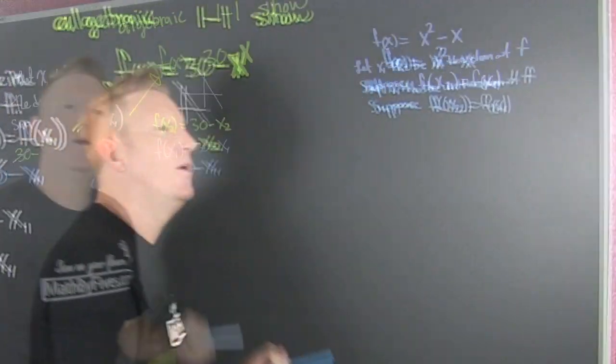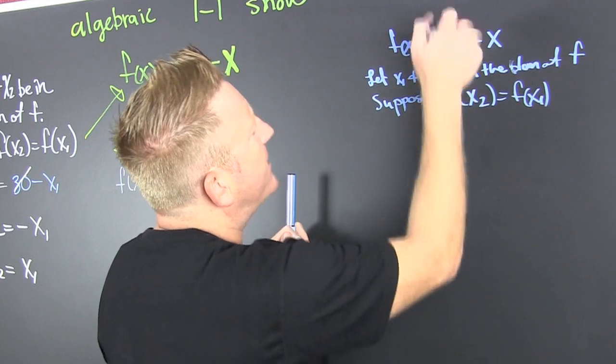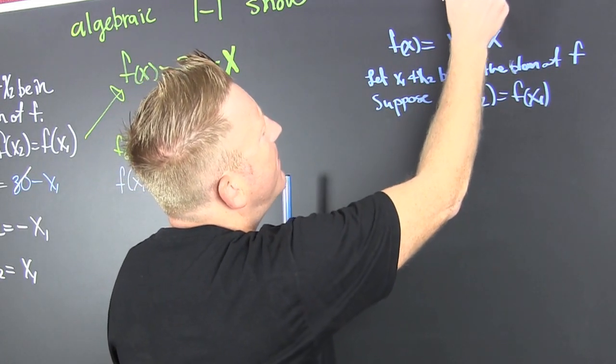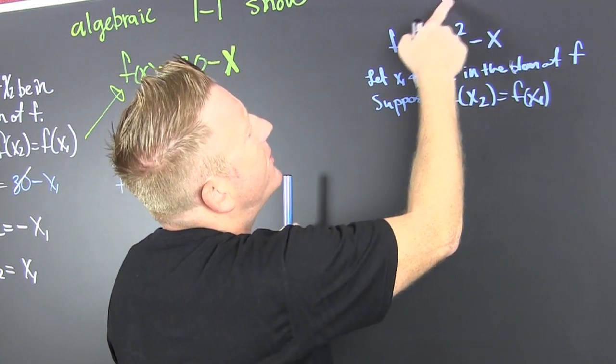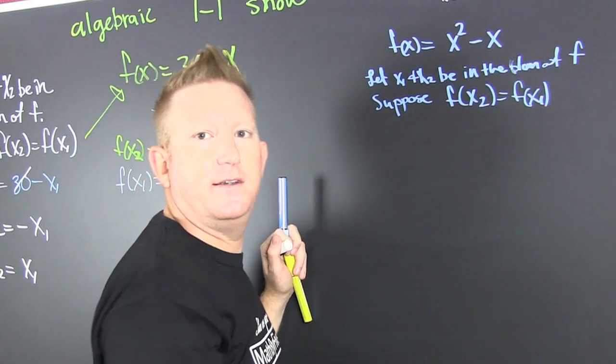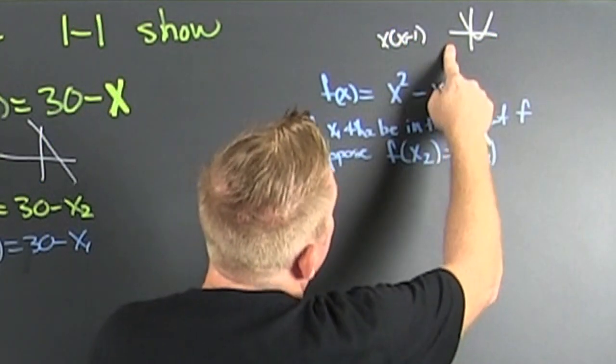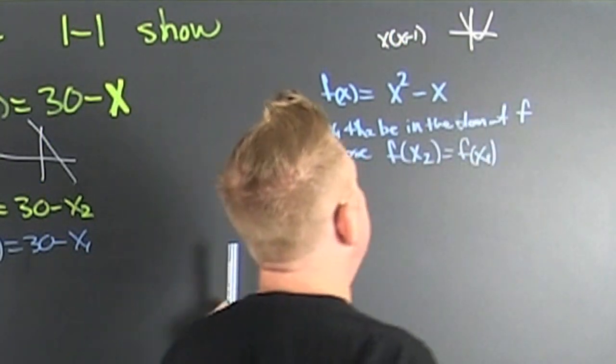What if you took something that wasn't 1 to 1? We're looking at that. If you factored it, that would be x times x minus 1. Yeah, okay, so it has a 0 there, and it has a 0 of 1. So that's looking like this. It does not, you can't see that. That doesn't pass the horizontal line test.